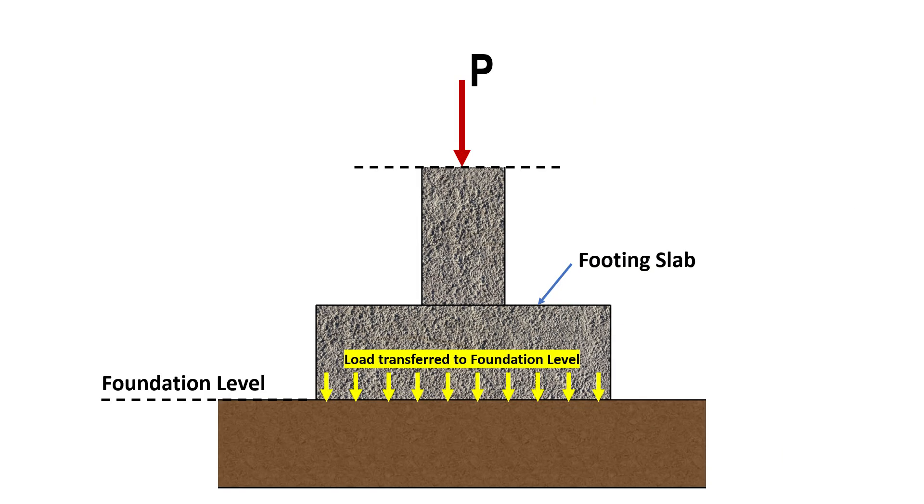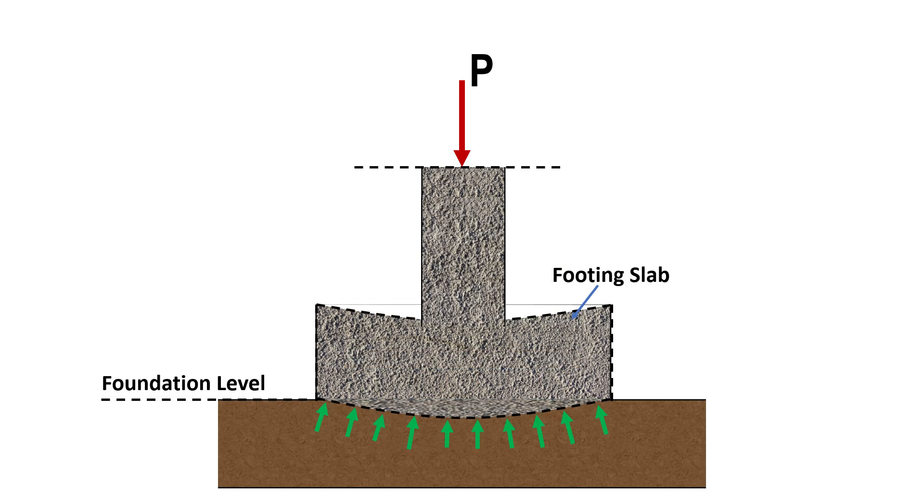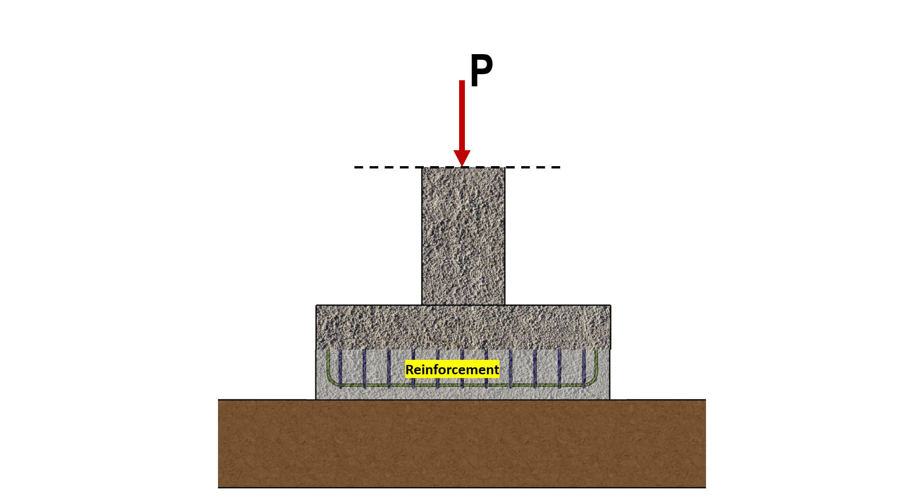When the load is transferred to the foundation level, the bearing pressure of soil causes the base of the footing to bend upwards. To counteract this, reinforcement is added at the bottom of the footing slab.